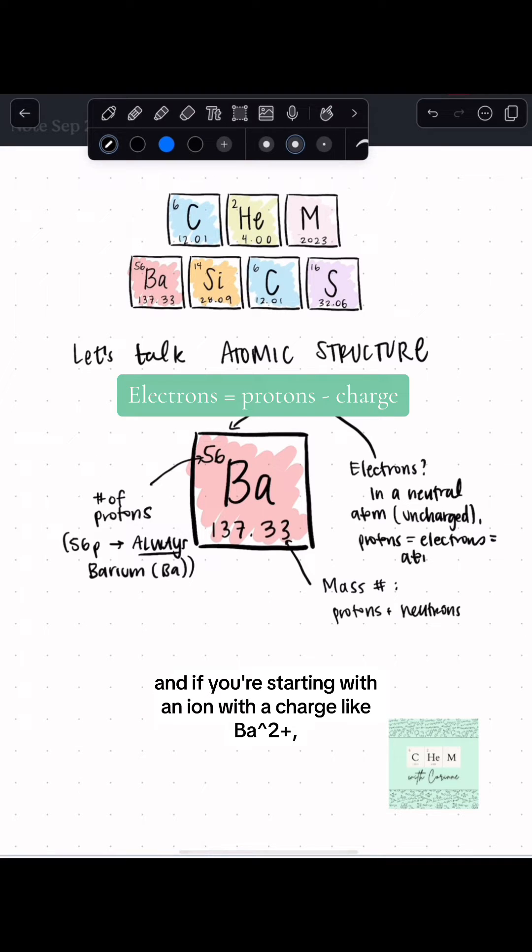And if you're starting with an ion with a charge like Ba2+, if you just remember the protons minus the charge, you'll have your number of electrons.